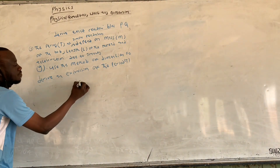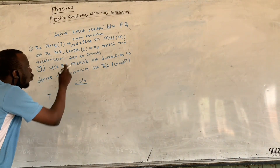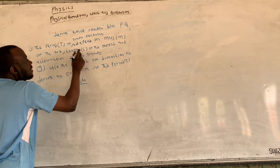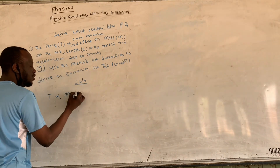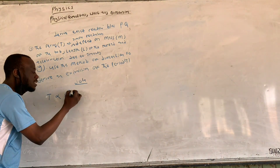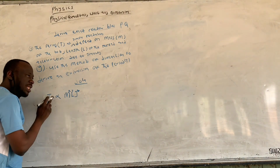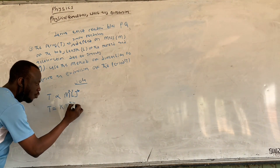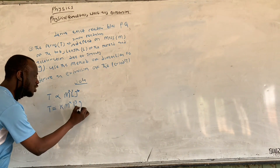Solution. Since T depends on mass m, length l, and gravity g, it is proportional to all three. We don't know whether each has a power or not, so we use them as powers of x, y, and z. We bring out the proportionality as: T equals k times m to the power x, l to the power y, and g to the power z.